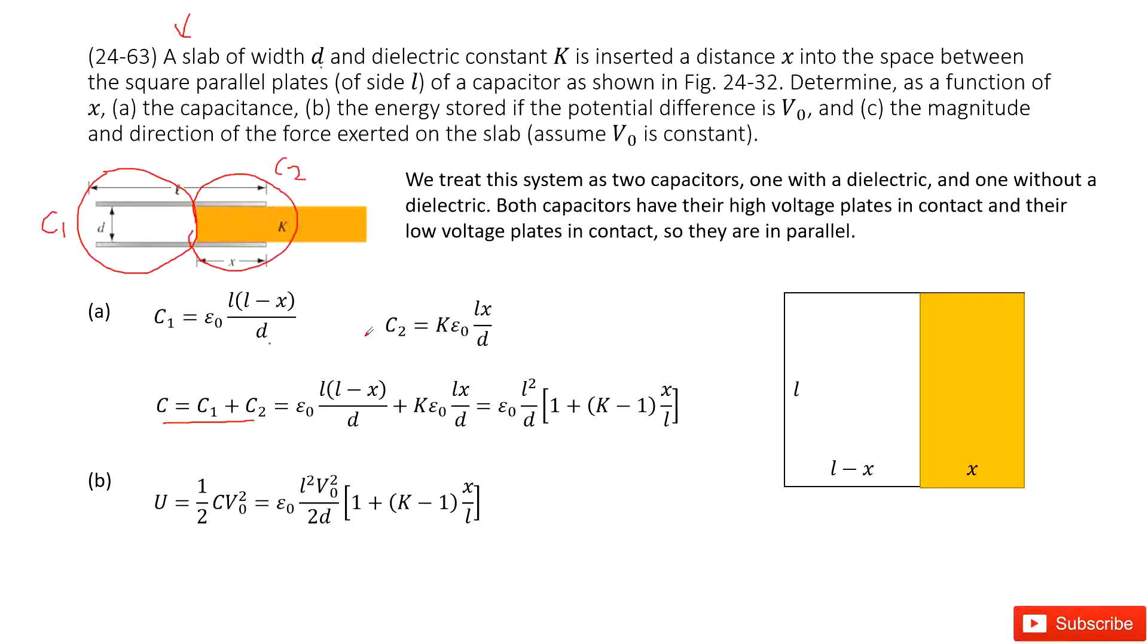So similarly, we can find the capacitance for capacitor C2. And there you can see the dielectric is inserted. So we times the dielectric constant k and the permittivity epsilon naught. And then the cross-sectional area, if we look at it from the top, that is L times x, divided by distance d.